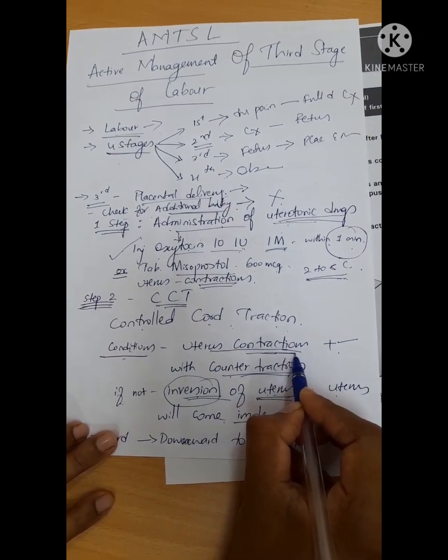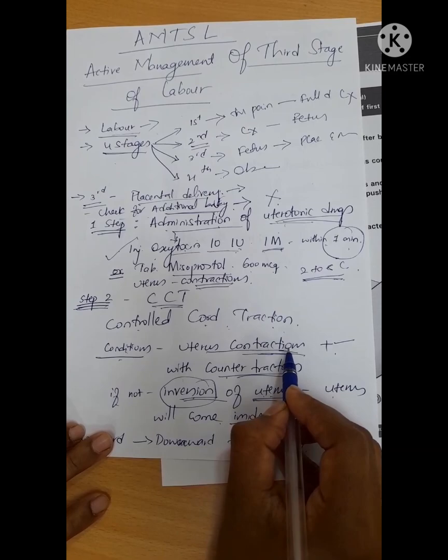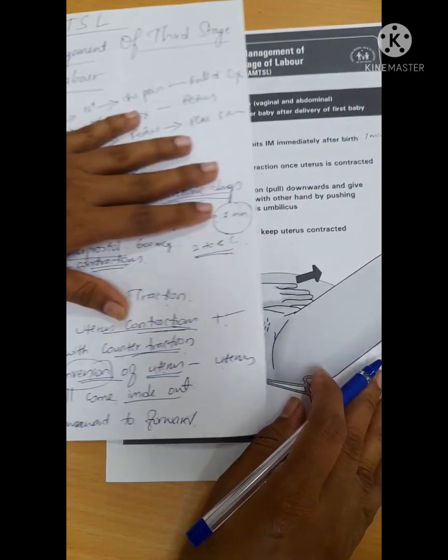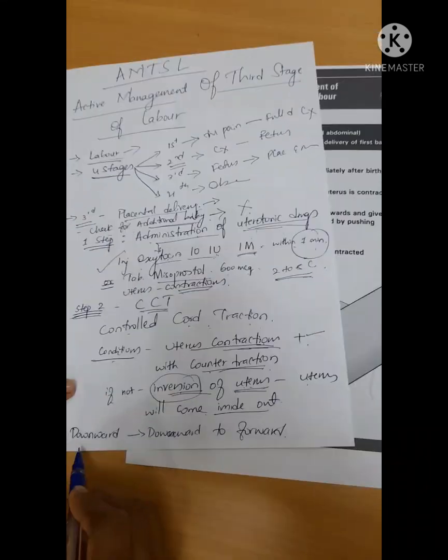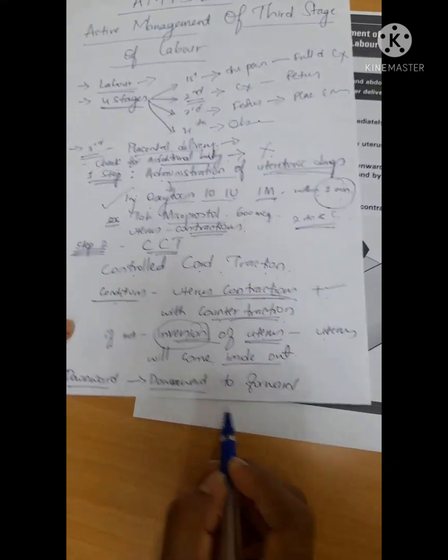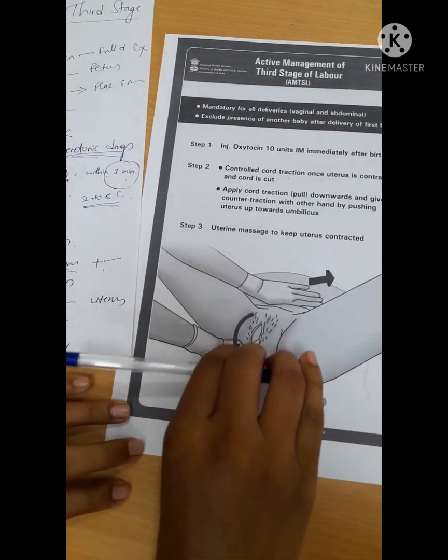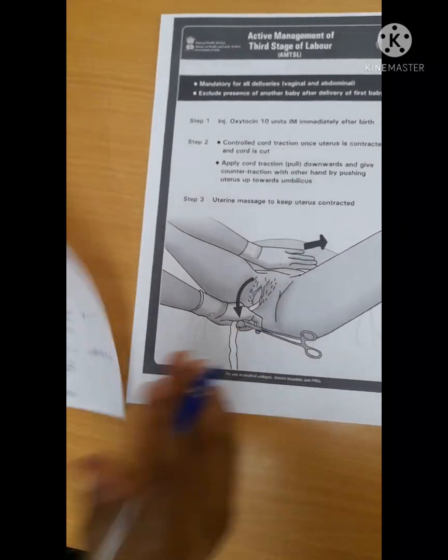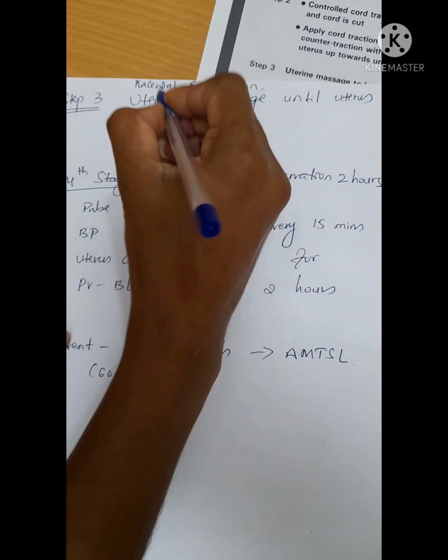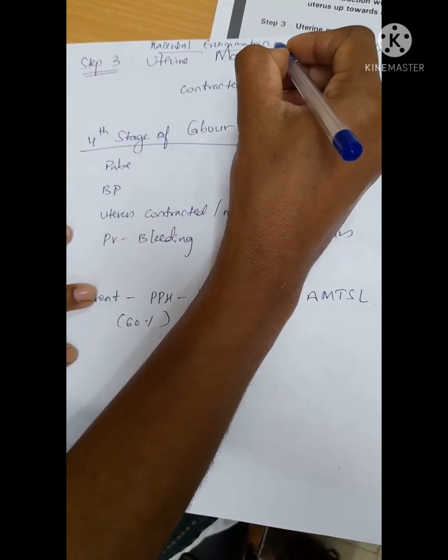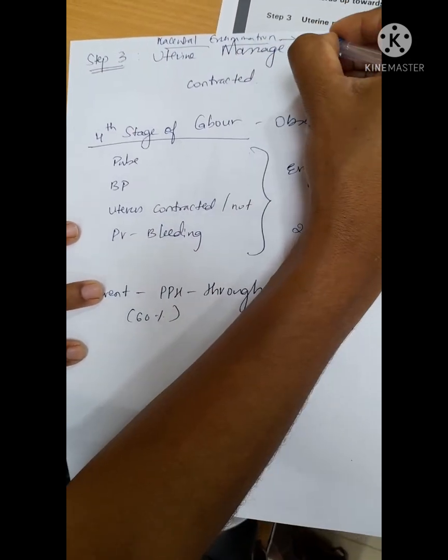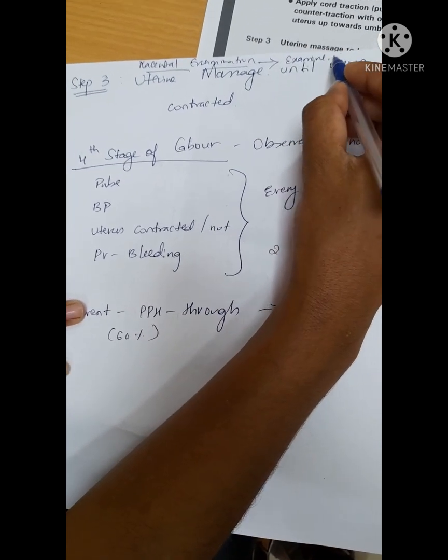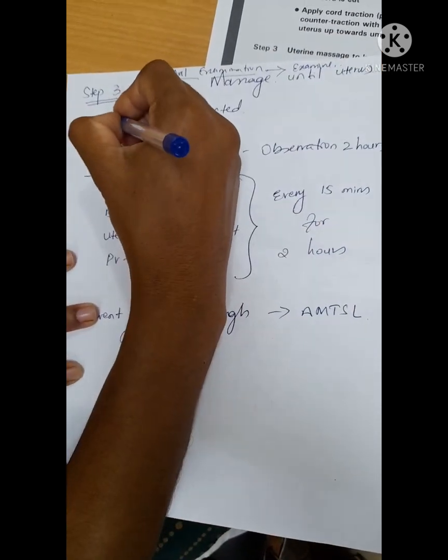So for that, first before applying CCT, you should wait for uterine contractions. Once uterine contractions come, then apply controlled cord traction, first downward then forward, until the placenta completely delivers. Once placenta and membranes are delivered, examine if all placenta and membranes and tissue have come out.